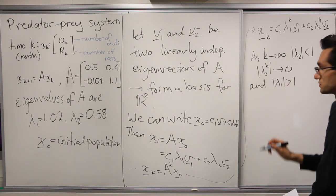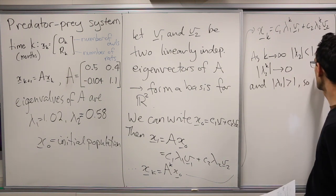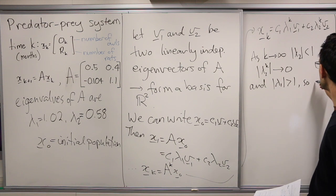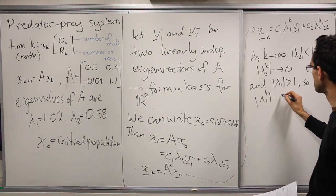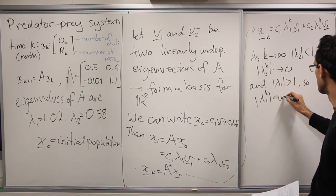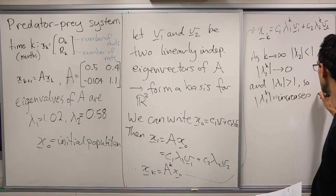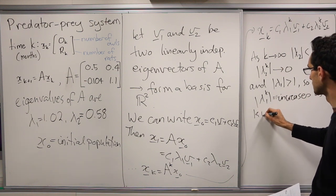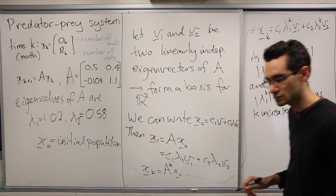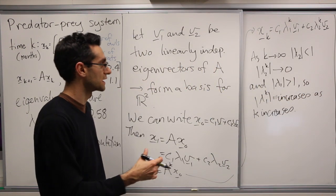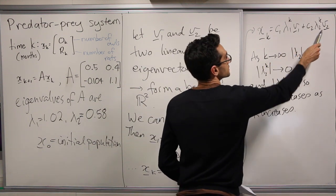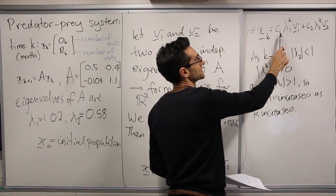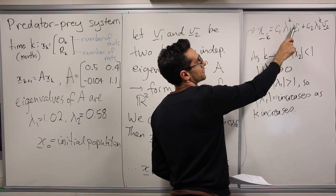And we have lambda 1 is bigger than 1 in magnitude, so lambda1^k increases as k increases. So when k is large, this second term here is very small, and so xk is approximately c1·lambda1^k·v1.